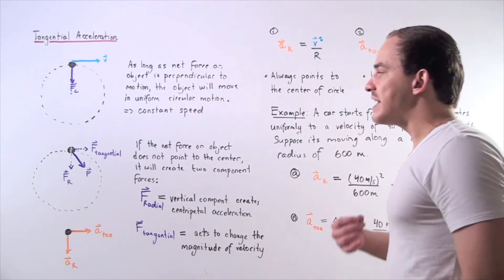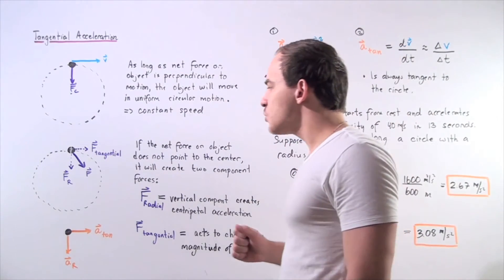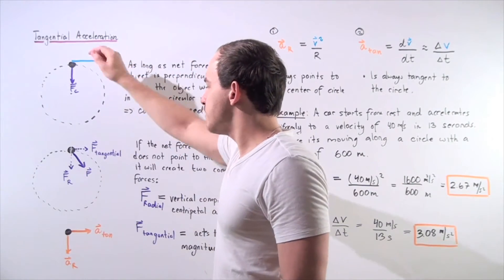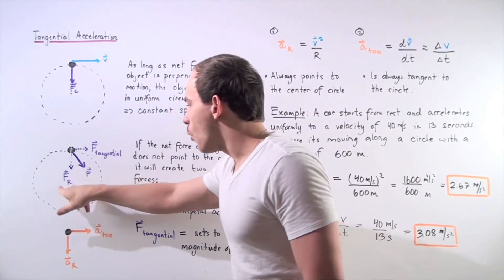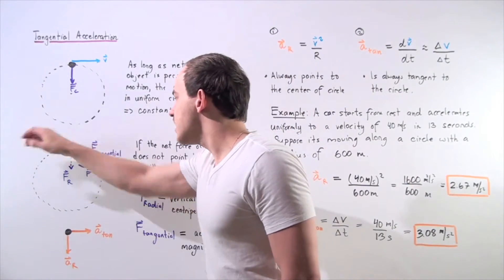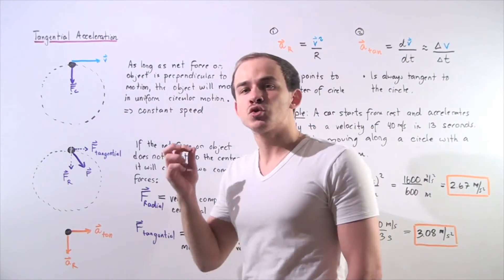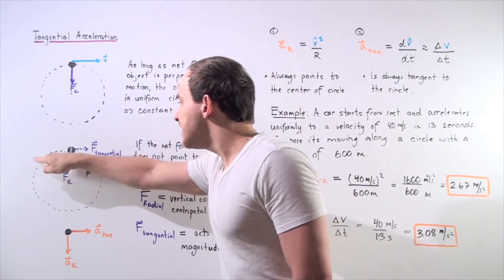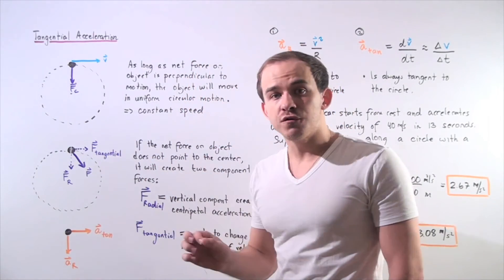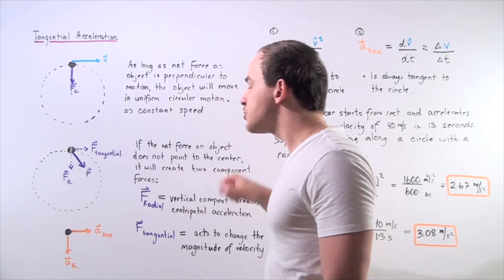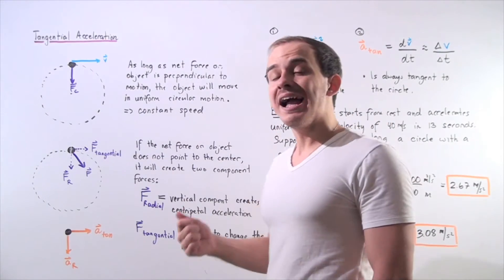We have a tangential force that is always tangent to the pathway and points along the same axis as the velocity vector, and we also have the radial force that acts along the y-axis. These two forces do different things. The radial force is perpendicular to the motion — to the velocity of our object — and because it's perpendicular, this force is responsible for creating centripetal acceleration, keeping our object moving in a circular pathway. The tangential force component acts along the same axis as the velocity vector and will act to change the magnitude of velocity.